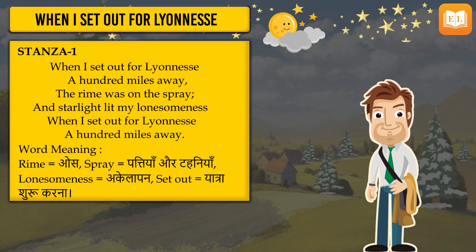Ab hum read karenge stanza one: 'When I set out for Lyonnesse, a hundred miles away, the rime was on the spray, and the starlight lit my lonesomeness. When I set out for Lyonnesse, a hundred miles away.' Lyonnesse jo hai, woh ek town hai jo 100 miles door hai unke place se. So woh akele us place par jaane lagte hain, aur jab woh raaste mein hote hain, he sees the rime was on the spray — there is frozen dew or frost on the leaves and branches of the trees. Rime ka matlab hota hai frost, aur spray ka matlab hota hai leaves and branches of the tree.